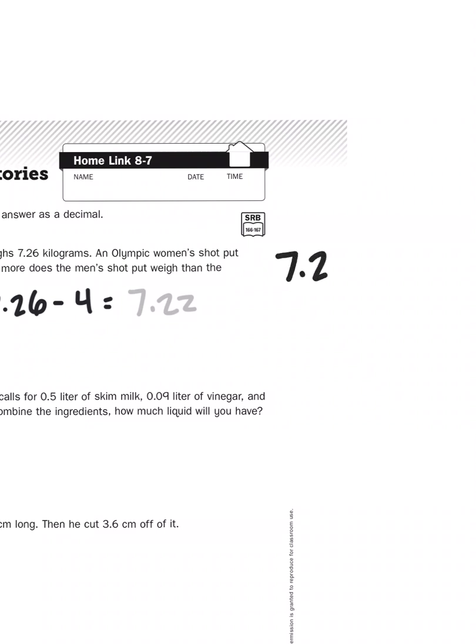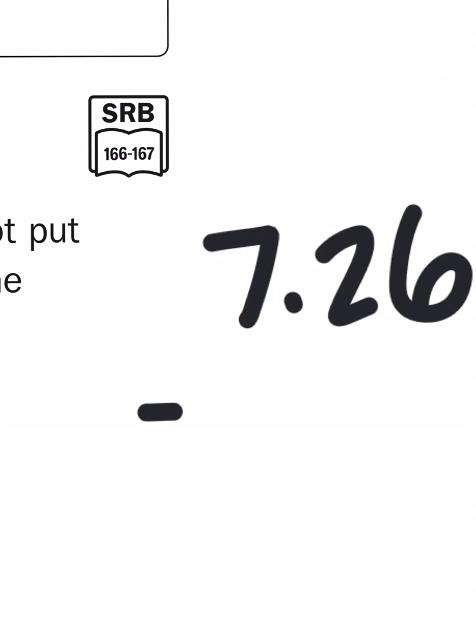Now, the placement of that 4 is important. What might be useful for you to know is that that decimal point right there is denoting the difference between whole numbers and fractions of a number.